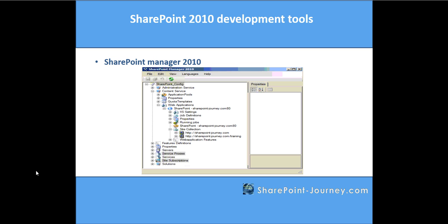The next one is SharePoint Manager. As you can see in the screenshot, it will display the entire hierarchy of your SharePoint. You have web applications, administration service, and under web applications you have timer job definitions, IIS settings, site collections, and web application features. All this information is available in the SharePoint Manager. Let's go ahead and open the SharePoint Manager.